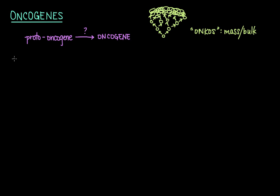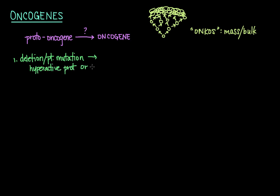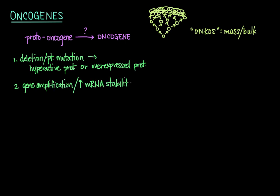Deletion or point mutation in the encoding sequence of the DNA in the gene itself, or within a regulatory region such as a promoter region, can lead to either a protein that is produced in normal amounts but is hyperactive, or a loss of regulation where the normal protein is just overexpressed. Gene amplification or an increase in mRNA stability that prolongs the existence of the mRNA and its activity in the cell can also lead to a normal protein that is overexpressed.